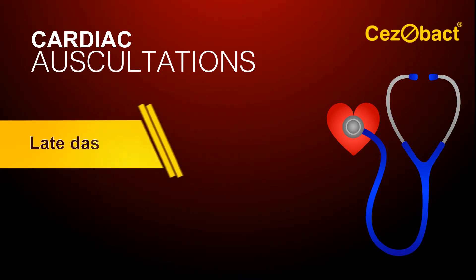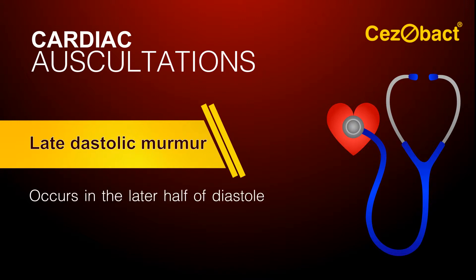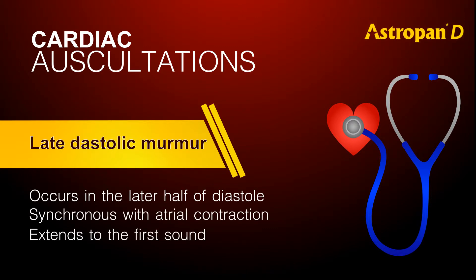Late diastolic murmur. A late diastolic murmur occurs in the latter half of diastole, synchronous with atrial contraction, and extends to the first sound.